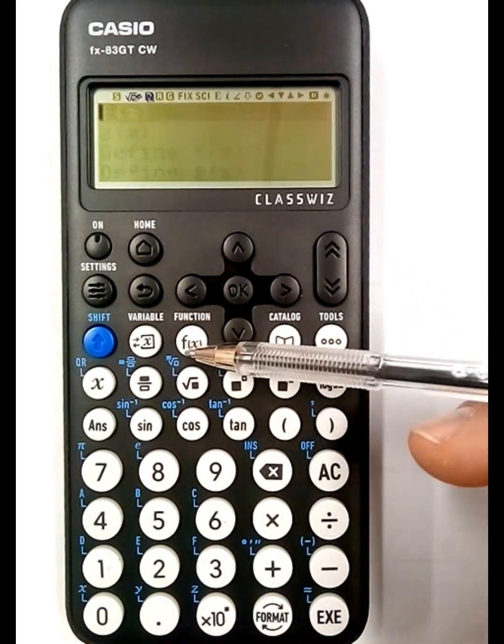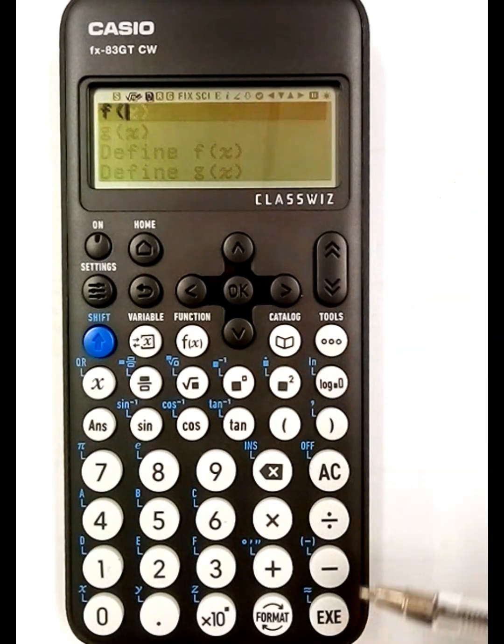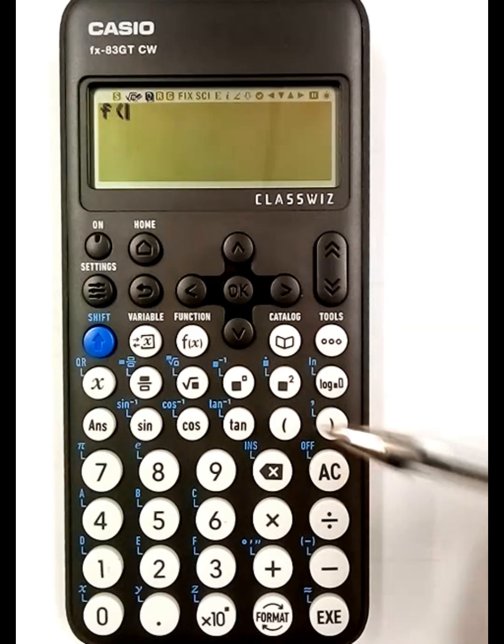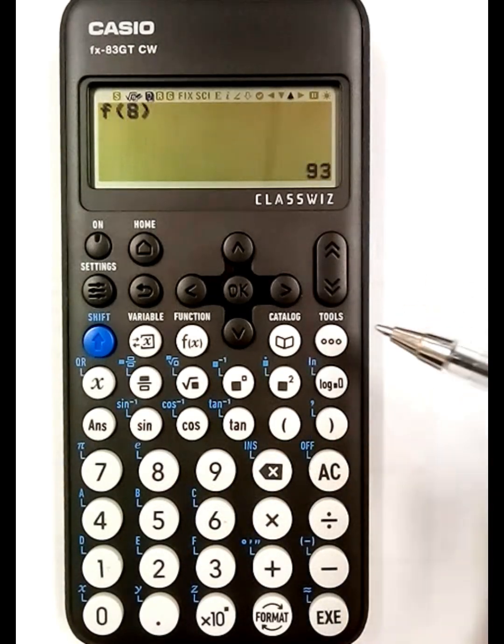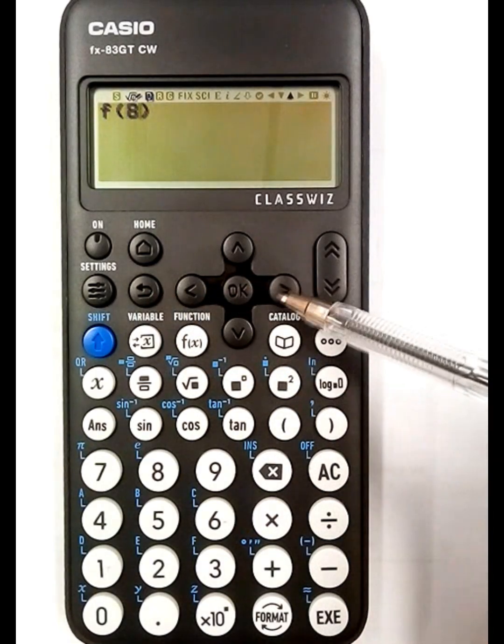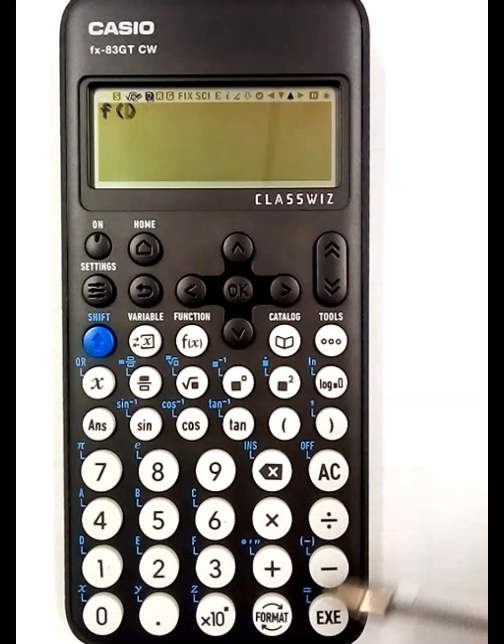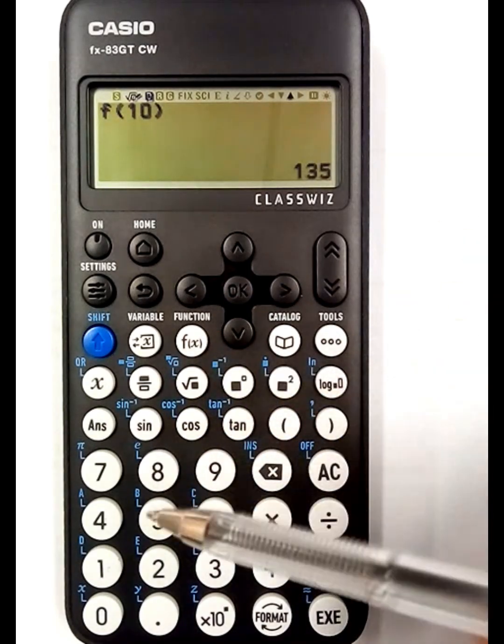Now if I go back into the functions I can actually go into the top one now with the FFX and it allows me to find any value. So I can put in 8 and it'll give me the answer. I can put in 10 and it'll give me the answer. So this might be handy for some people.